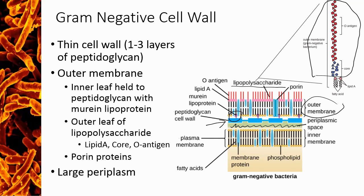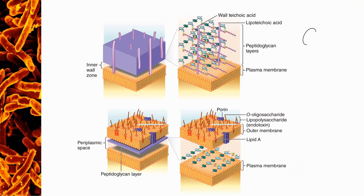This compartmentalization doesn't exist in gram-positive cells because without the outer membrane, there's nothing to trap molecules — anything secreted will simply diffuse away through the peptidoglycan and into the environment. It is important to know what type of cell wall a species has because it affects how antibiotics function. For example, gram-positive species can be killed with penicillin, but gram-negative species cannot, because the outer membrane makes it harder to get molecules into the cell. Interestingly, the thick layer of peptidoglycan makes gram-positive cells harder to destroy physically, so they are often more difficult to lyse by physical means.